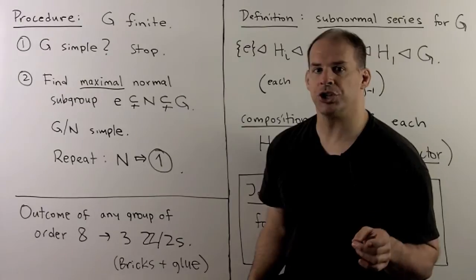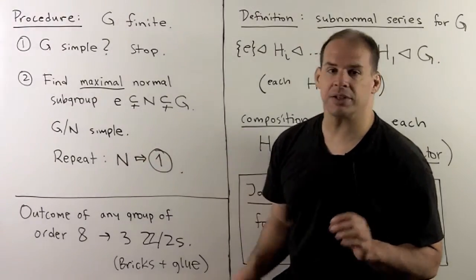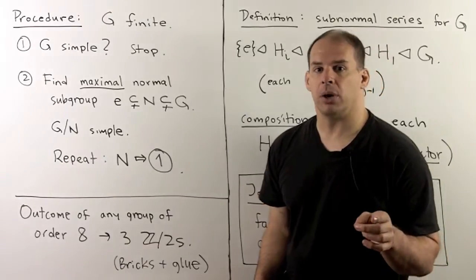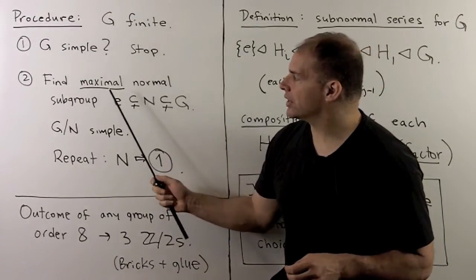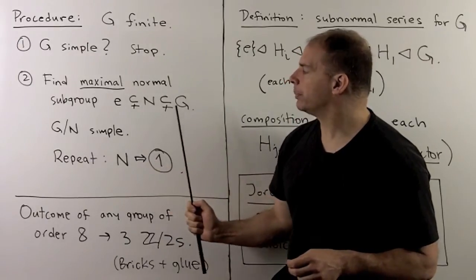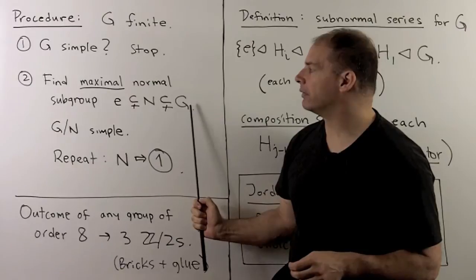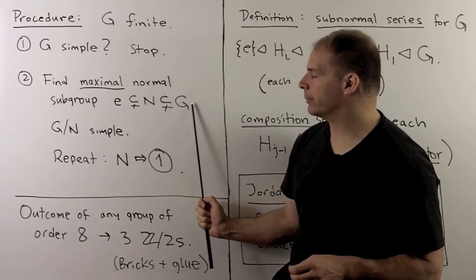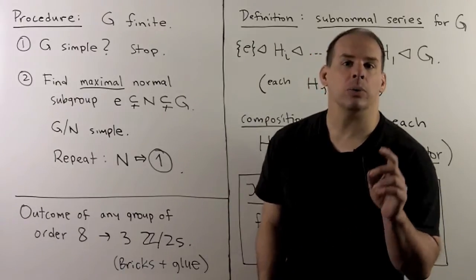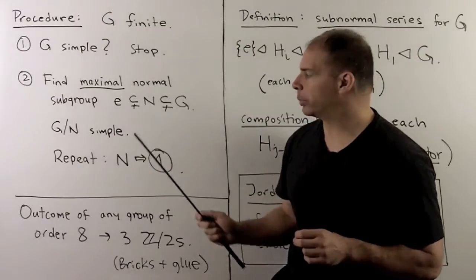Here's our procedure in general. Start with a finite G. First, we ask if G is simple. If so, we stop. Otherwise, there's going to exist a maximal normal subgroup N, not equal to E or G itself. Maximal is just going to mean there's no normal subgroups between N and G. The condition of maximal means that G mod N is a simple group.